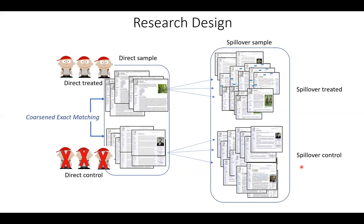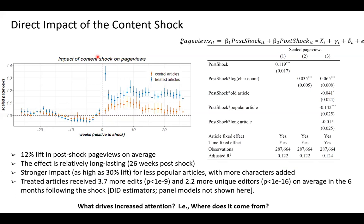To infer the counterfactual of not receiving content contribution, we also construct a set of control articles that did not receive student contributions, matched to treated articles based on article characteristics. We find a significant lift in post-shock page views for treated articles compared to control articles — about 12% lift on average compared to their own baseline. The effect is long-lasting, persisting at least 26 weeks after the content contribution shock. The effect is stronger for less popular articles, and for articles that received more content during the class period — up to a 30% lift. Treated articles also received more edits and more unique editors in the six months following the shock.